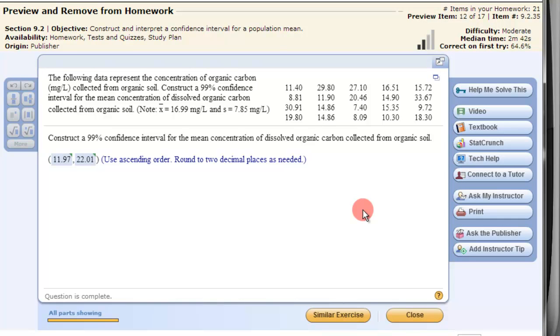In this video we'll look at creating a confidence interval on a TI-83-84 calculator. So here's the data. This first part is if we're given pure data.